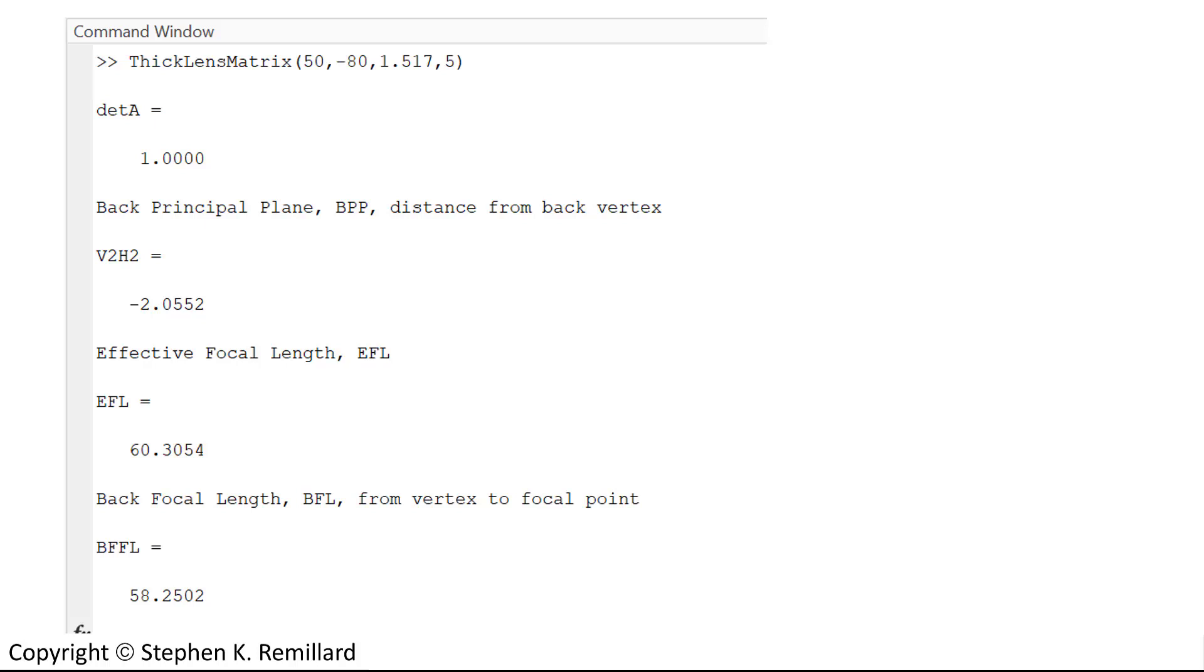And when I run the function, I get my confirmation that the determinant is 1. I get the location of the back principal plane being minus 2.0552 millimeters in front of the back vertex. Effective focal length 60.3 and the back focal length 58.25. Same things we just calculated longhand.